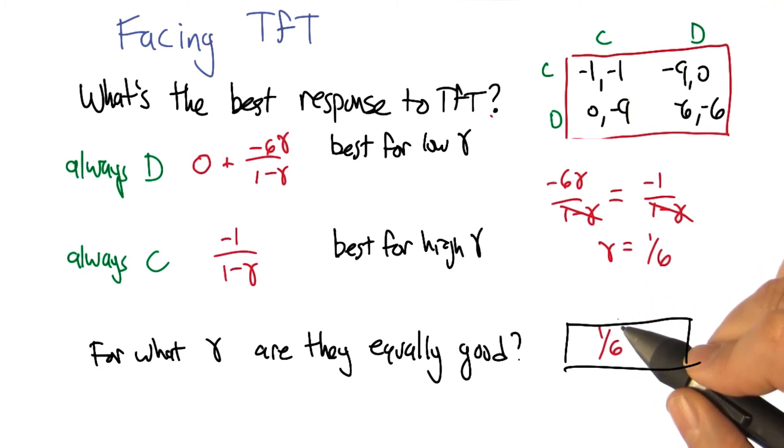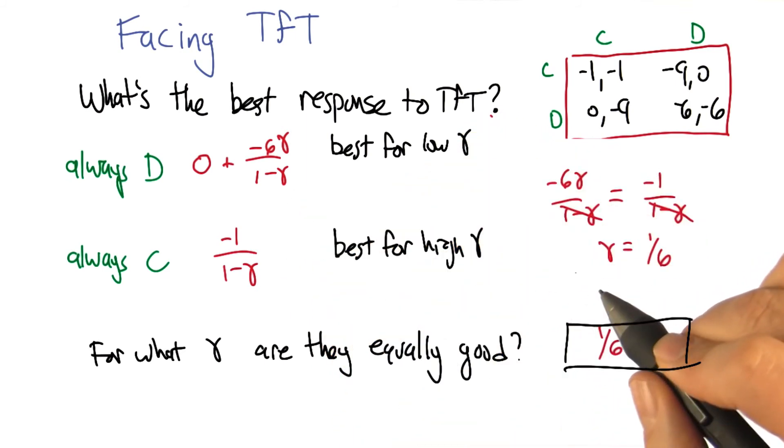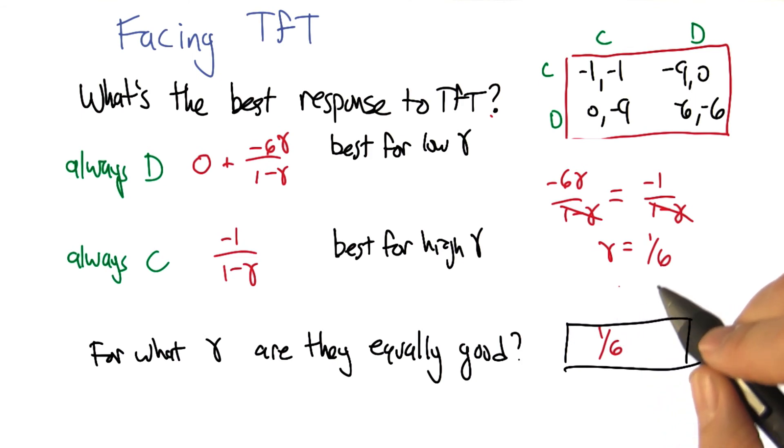...it's going to be better to cooperate than to defect against tit for tat. Or 1/6th plus epsilon. Indeed. Yeah. I like that. That's actually very cool.